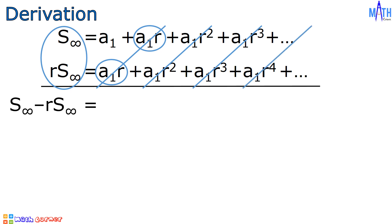A sub 1 times r cubed minus a sub 1 times r cubed is also equal to zero. Every other term is equal to zero, and since the pattern continues without end, we are left with the first term, a sub 1, on the right side of the equation.